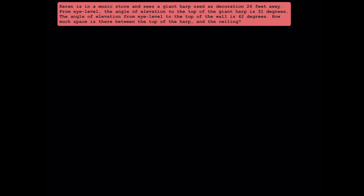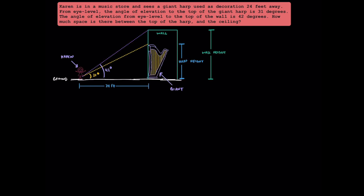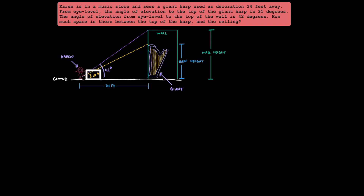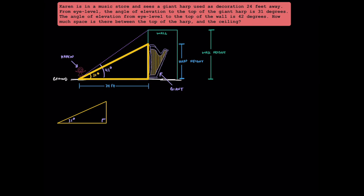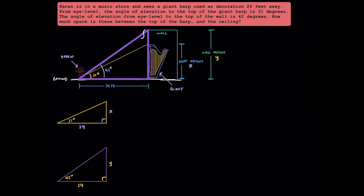Let's try another one here. Pause the video and do it on your own, and unpause it to see how you did. Here's my diagram. Here's Karen, and here's the giant harp in the room. She's 24 feet away from the harp. This measurement here represents the height of the harp, while this represents the height of the wall. 31 degrees represents the angle of elevation to the top of the harp, and 42 degrees represents the angle of elevation to the top of the wall. Simplifying the yellow triangle: we have a 90-degree angle, an angle of elevation of 31 degrees, the horizontal distance of 24, and the height of the harp we'll call x. For the purple triangle: here we have our right angle, an angle of elevation of 42 degrees, still a horizontal distance of 24, and we'll call the height of the wall y. Since the question asks us to find the distance between the top of the wall and the top of the harp, we can take y and subtract x. Let's call that space d.